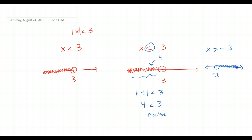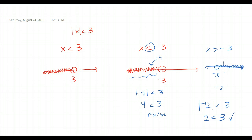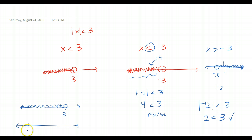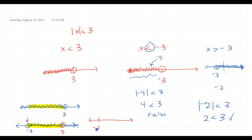When we graph x greater than negative 3, we have all values strictly larger than negative 3. Let's check negative 2 in the original: the absolute value of negative 2 is less than 3, so it checks out. To satisfy this inequality, x must be less than 3 and greater than negative 3. We're looking for the intersection — they overlap from negative 3 all the way to 3. That's what our graph should look like — all valid solutions for this absolute value inequality.